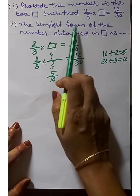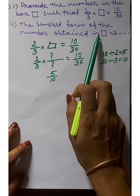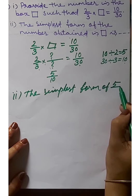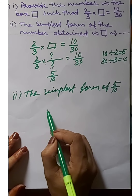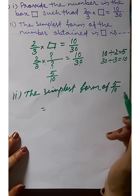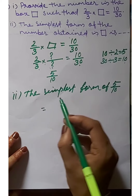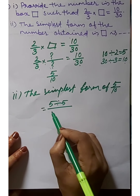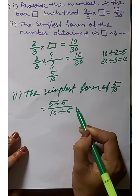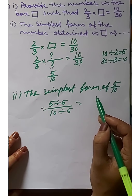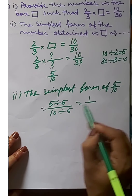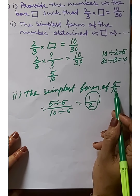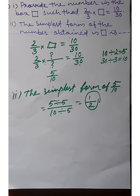We find the simplest form of the number obtained in the box. The simplest form of 5/10: since 5 and 10 are both multiples of 5, we divide both by 5. 5 ÷ 5 = 1 and 10 ÷ 5 = 2. The simplest form of 5/10 is 1/2.